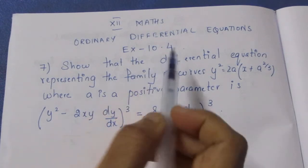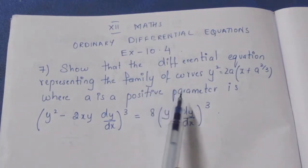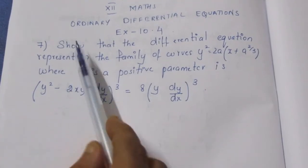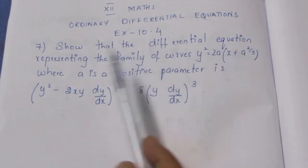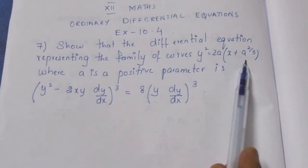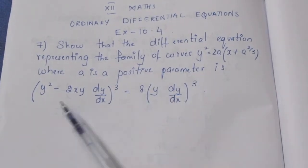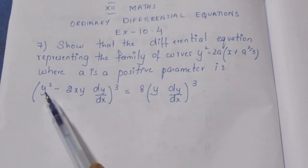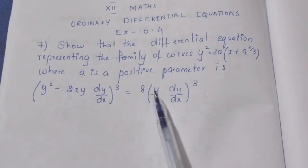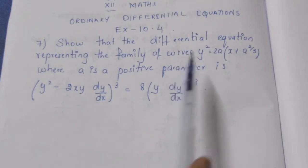Hello viewers, I am IT Iniki. This is 12th Maths ordinary differential equations, Exercise 10.4, 7th sum. In this video, we will look at the question: Show that the differential equation representing the family of curves y² = 2a(x + a^(2/3)), where a is a positive parameter, is to prove that (y² - 2xy·dy/dx)³ = 8(y·dy/dx)⁵.